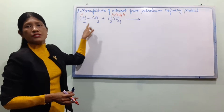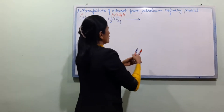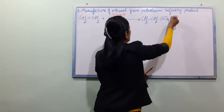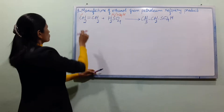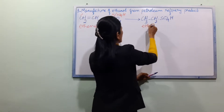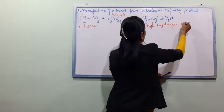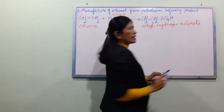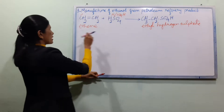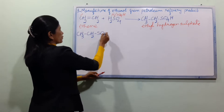The product formed is CH3CH2SO4H, which is ethyl hydrogen sulfate.